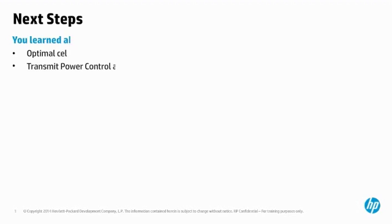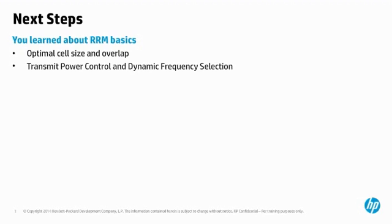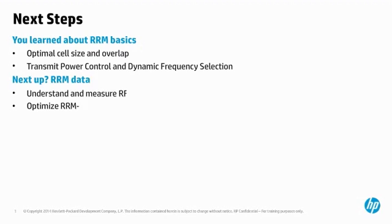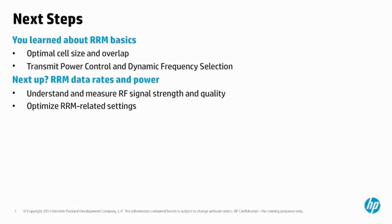You have learned about the basics of RRM with a special focus on how the TPC and DFS mechanisms can optimize cell overlap and minimize co-channel interference. Now it is time to dive deeper into RRM data rates and RF power. In session nine, you will learn about key metrics used to measure the quality and strength of an RF signal, and how to further optimize RRM-related settings to improve performance.